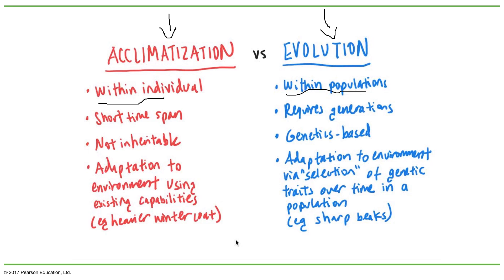When we talk about acclimation we talk about a short time span — for example, winter. It's cold, so what do I have to do? Get a winter jacket — there's no way to live without one in Winnipeg. Evolution, on the other hand, requires many generations. Some animals will develop different pathways, like fur, that help them adjust to the environment. So acclimation is short-term while evolution is long-term.